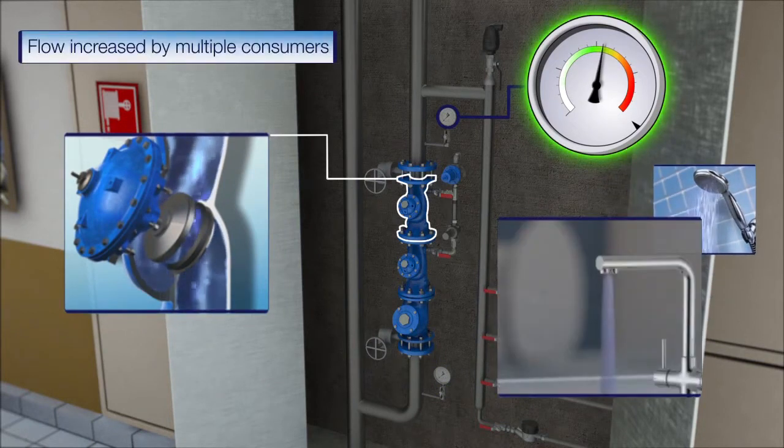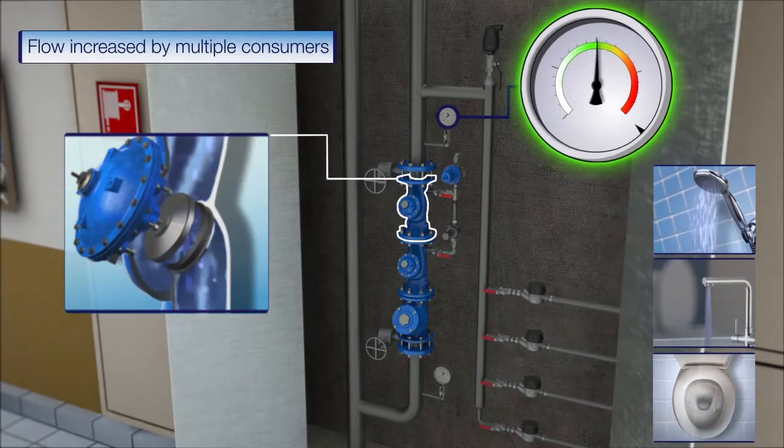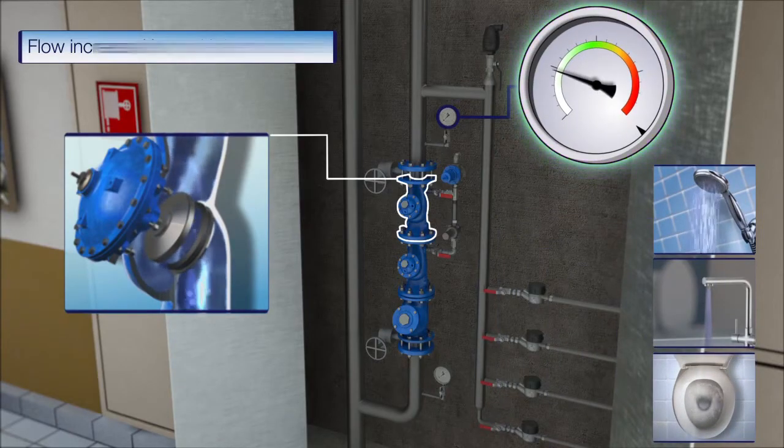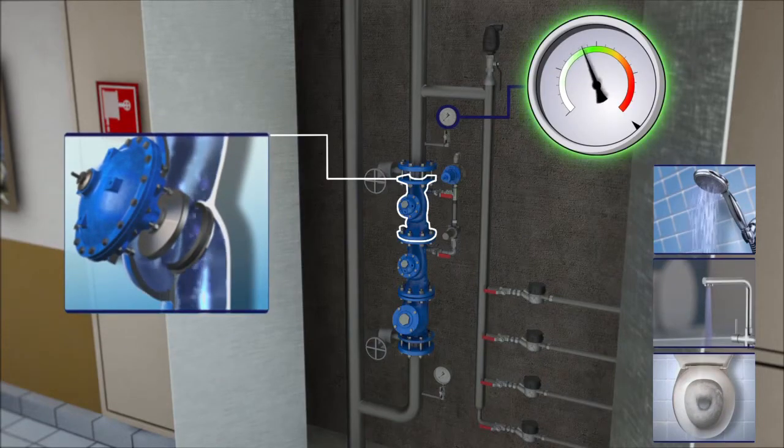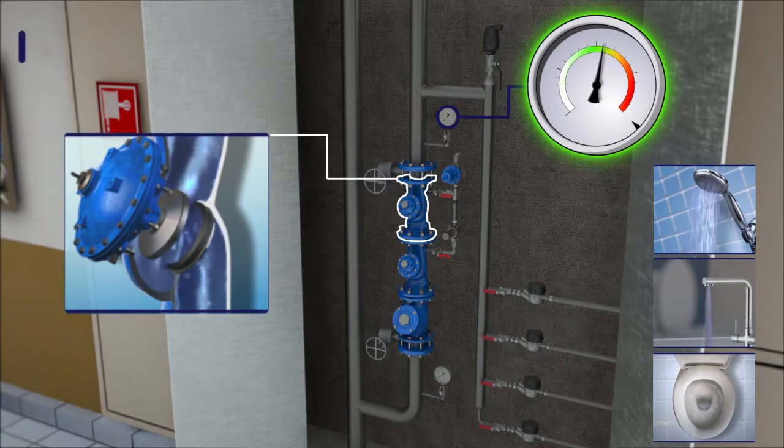In cases of high water demand, the flow rate increases dramatically and the downstream pressure plunges accordingly. The main valve increases its opening level so the downstream pressure returns to regular setting.